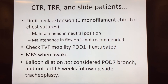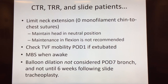For cricotracheal resection, tracheal resection, and slide tracheoplasty patients, you want to limit their neck extension. We find that a zero monofilament chin-to-chest suture is useful. You want to maintain the head in a neutral position with this stitch — it is actually uncomfortable to maintain the head in flexion, so that's not recommended. On post-operative day one, if they're extubated, you can always check for cord mobility after these procedures as the recurrent laryngeal nerves are at risk. You want to get a modified barium swallow while they're awake to make sure it's safe for them to swallow. Of note, balloon dilation is not considered for the post-operative day seven bronchoscopy, and you don't want to consider this until six weeks following a slide tracheoplasty specifically.